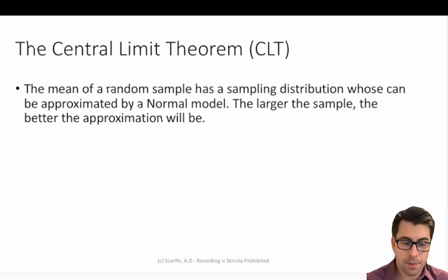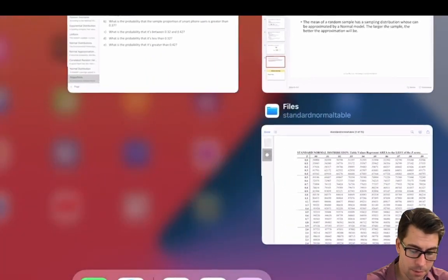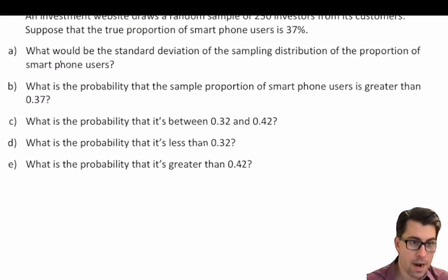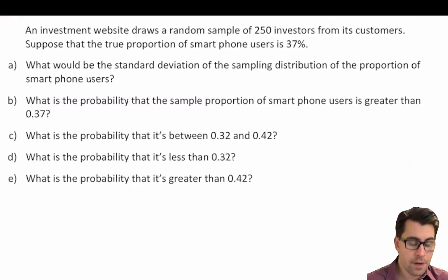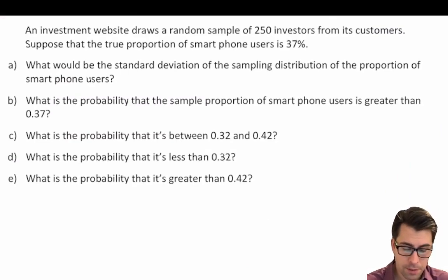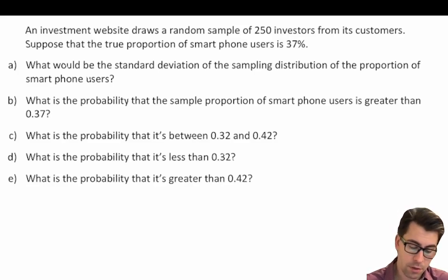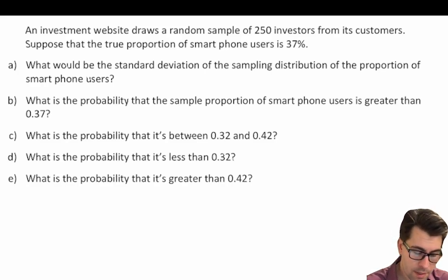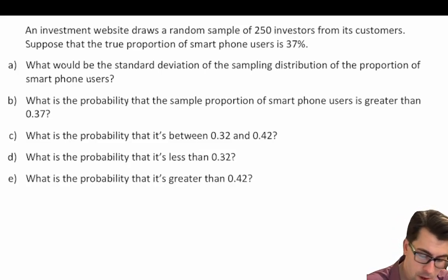Let's put some of this into practice with a few problems. An investment website draws a random sample of 250 investors from its customers. Suppose that the true proportion of smartphone users is 37%, or 0.37. Part A: what would the standard deviation of the sampling distribution of the proportion of smartphone users be? We know our sample size n is equal to 250, and our population proportion p is 0.37.